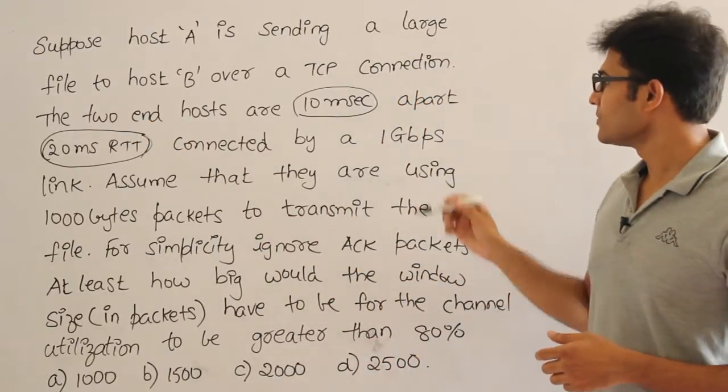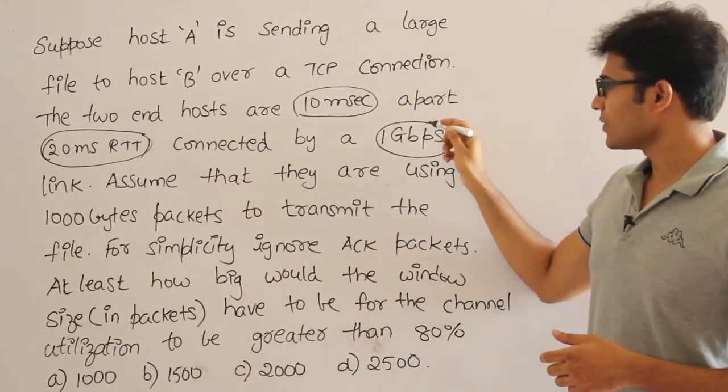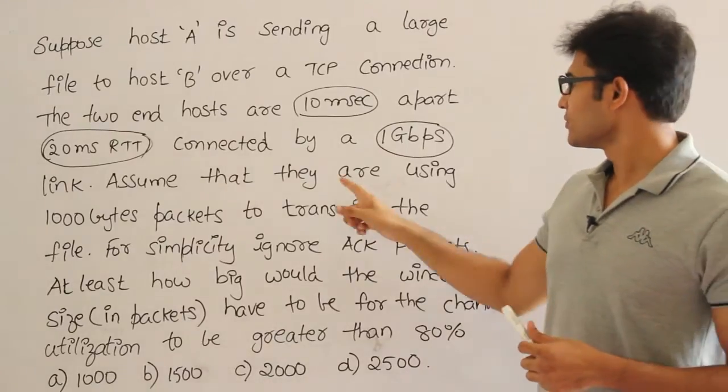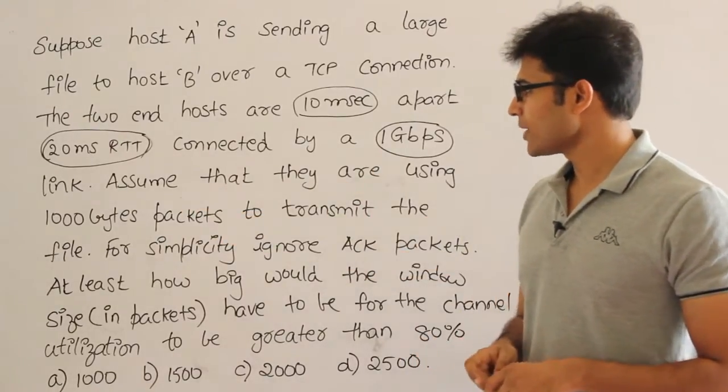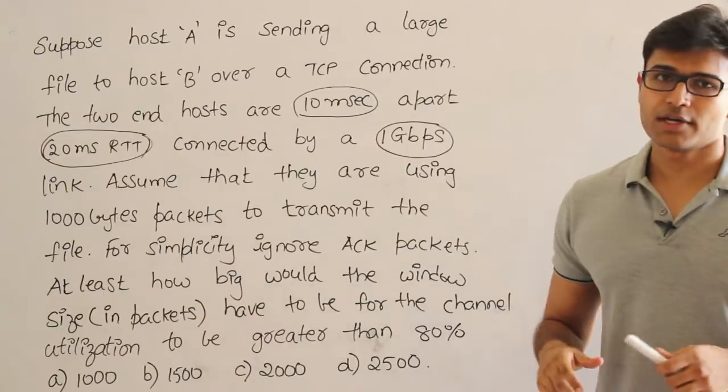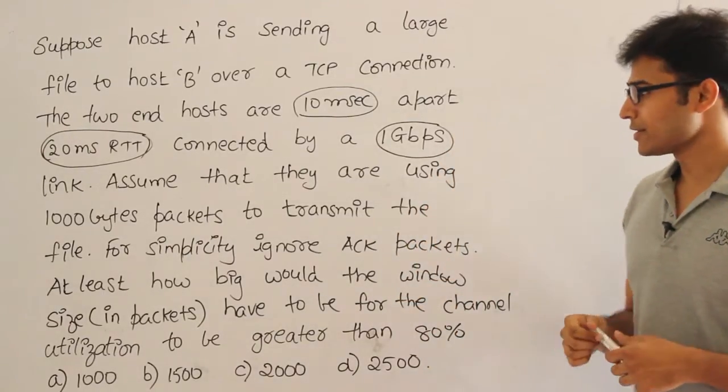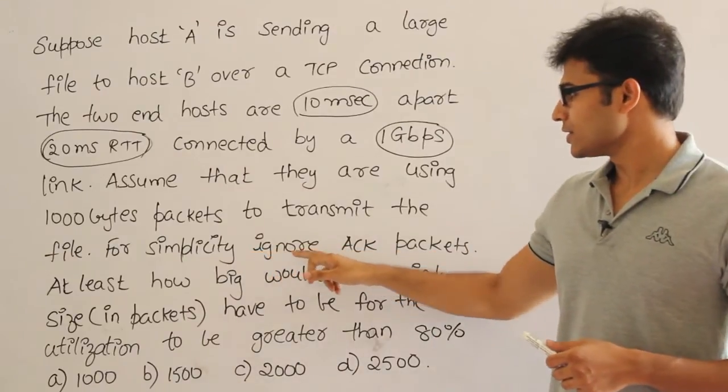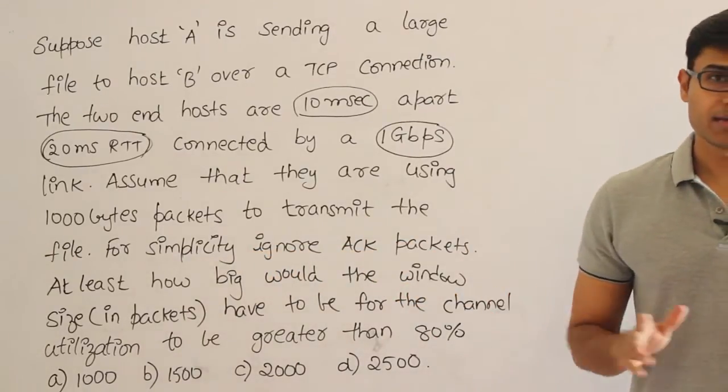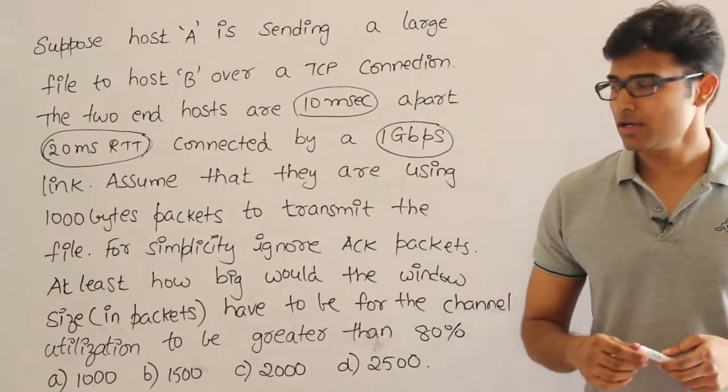Connected by a 1 Gbps bandwidth link. Assume that they are using 1000 byte packets to transmit the file. So the total file is transmitted in terms of 1000 byte packets. For simplicity ignore acknowledgement packets. Don't consider what happens for the acknowledgement bytes.